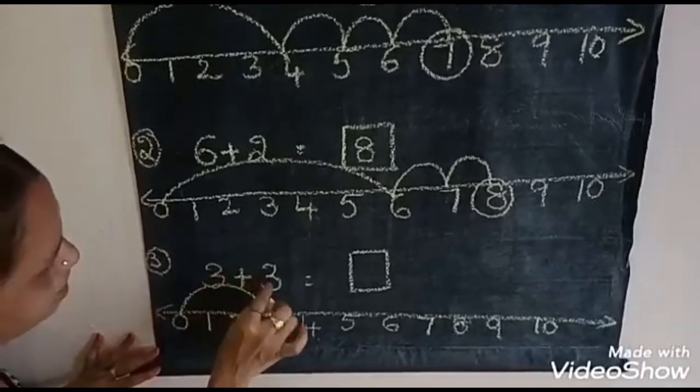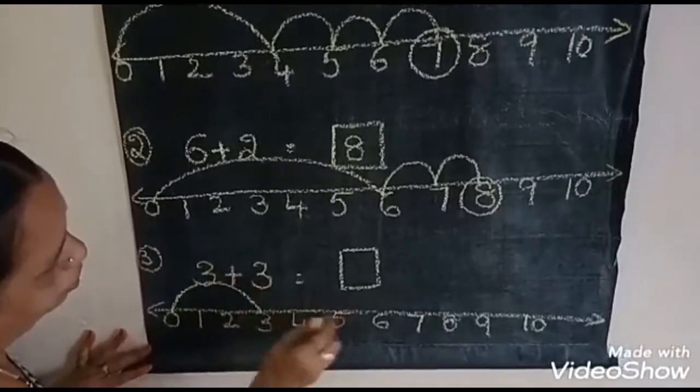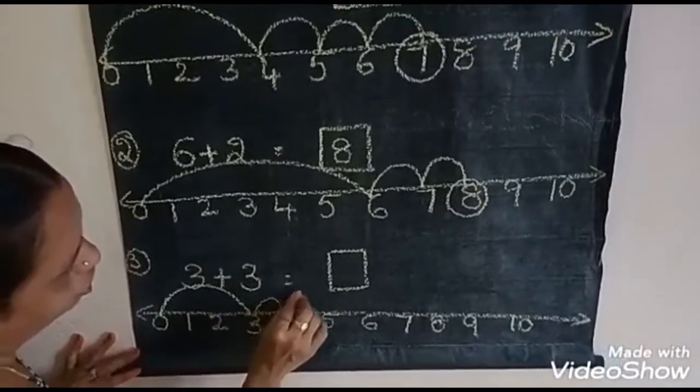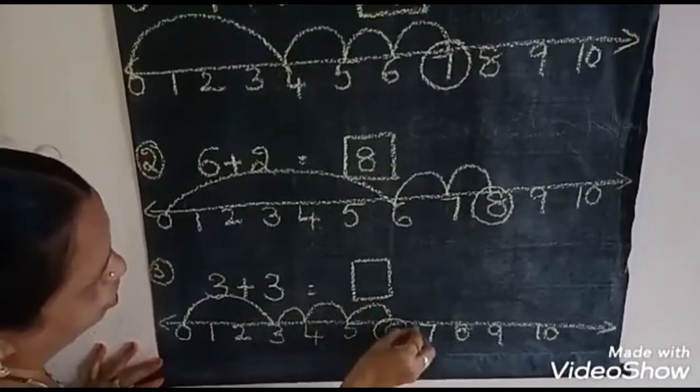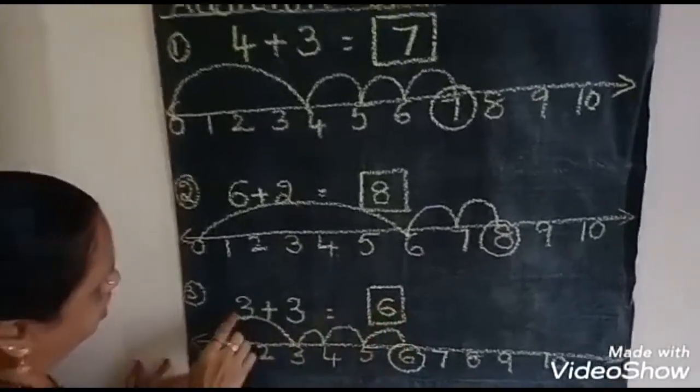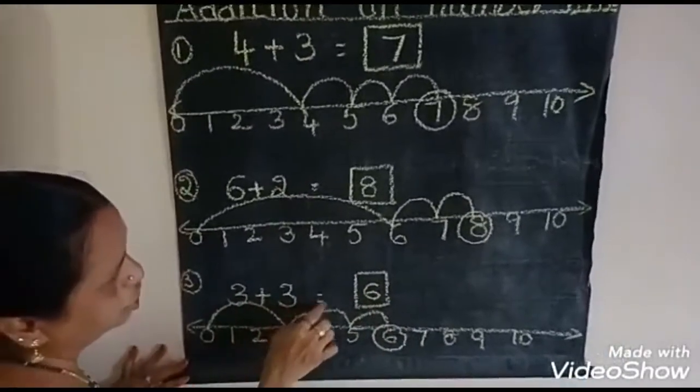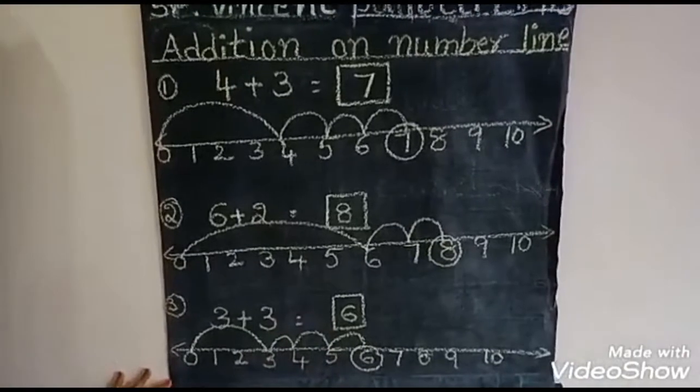3 plus 3. How much number you add? 3. 1, 2, 3. So, answer is 6. 3 plus 3 is equal to answer is 6.